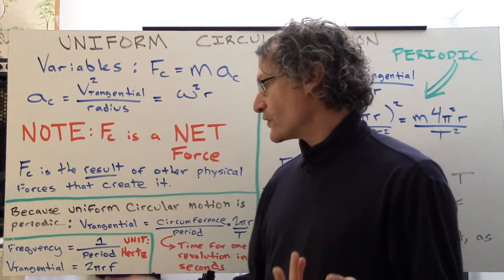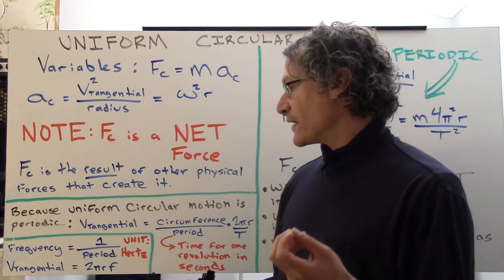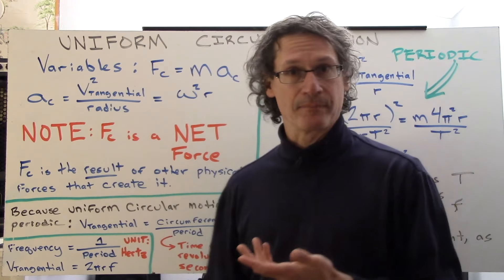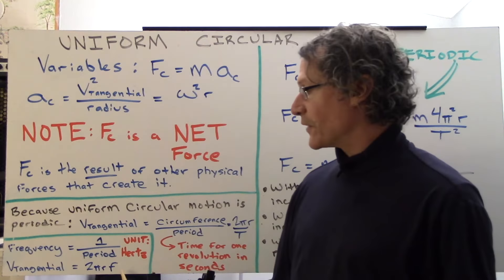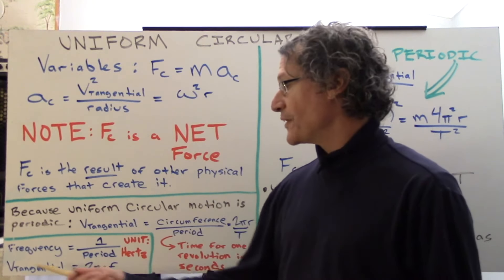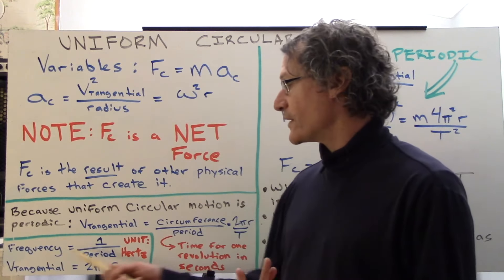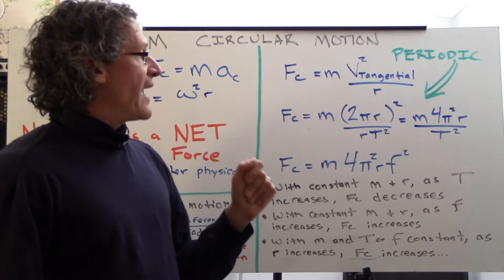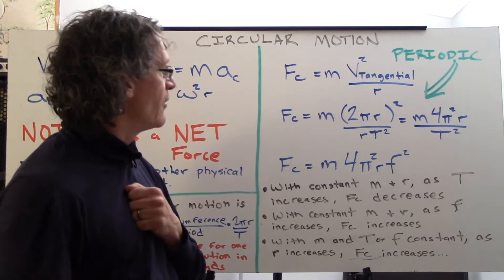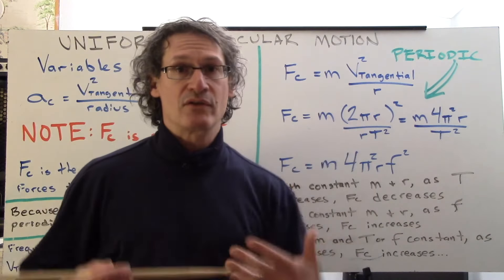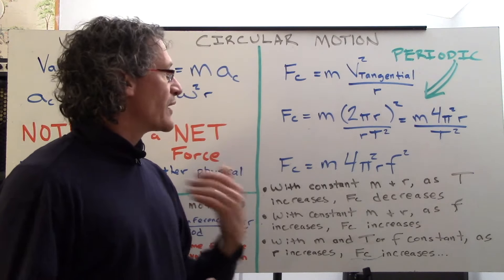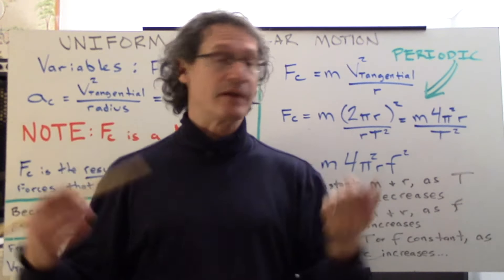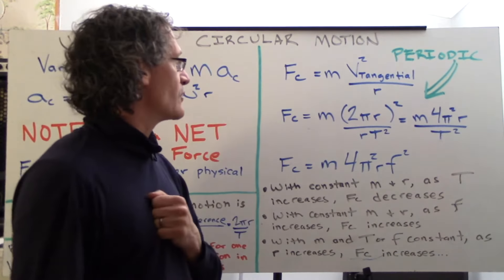v tangential is 2π times the radius times the frequency. You can use either one if you have either of the information over here. If you have a period, you can use this. If you have frequency, use this. Or you could easily transfer between the two with this very simple relationship. Frequency is 1 over period. So if we have periodic motion over here, what we can do is evolve these equations a little bit further so that we can take a look at them in terms of the period or in terms of frequency instead of v tangential. So here we go.